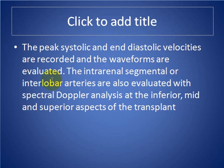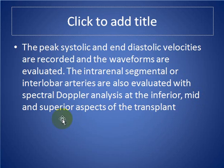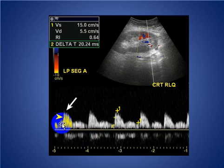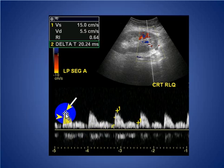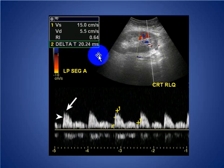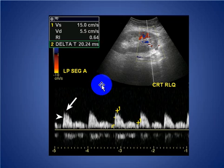The intrarenal segmental and interlobar arteries are also evaluated with spectral Doppler analysis at the inferior, mid, and superior aspects of the transplant. Here you can see a normal segmental waveform — it shows a brisk upstroke with a peak systolic velocity and peak diastolic velocity visible. The resistive index is normal, between 0.6 and 0.75.